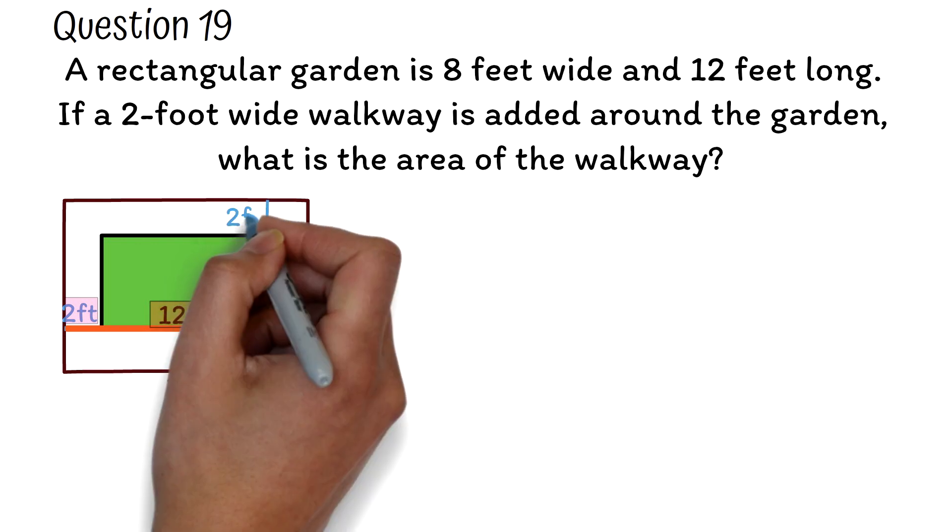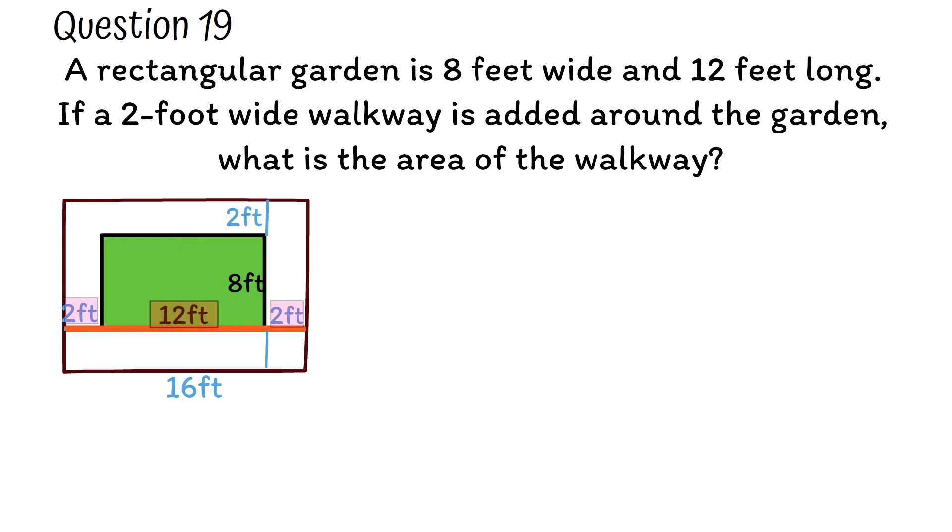The same way, 2 feet walkway is added to the top and to the bottom side of the width of the garden. Hence, the width of the garden plus the walkway is 2 plus 8 plus 2, which is 12 feet. To find the area of the walkway, first we have to know the area of the garden.